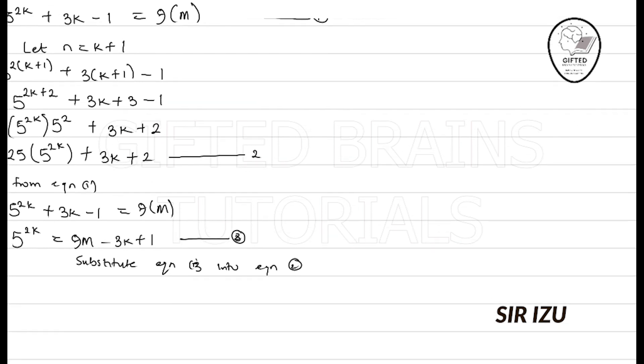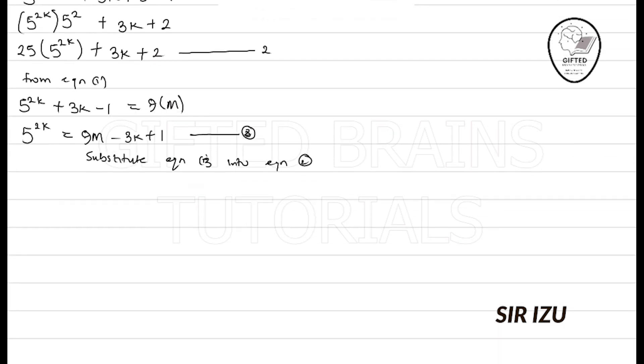So, what I actually mean is that, where I have the 5^(2k) in equation 2 here, I will substitute this value for it, which is 9m - 3k + 1. So, let me do that now.